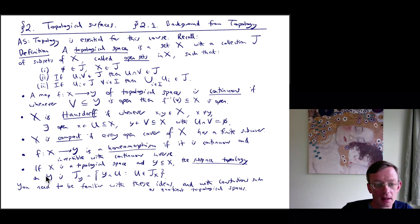A function F going from X into Y is a homeomorphism if it is continuous and invertible with continuous inverse. So homeomorphisms are isomorphisms of topological spaces. Finally, if X is a topological space, Y is contained in X as a subset, then the subspace topology on Y is T_Y, which is the intersection Y intersect U of all open sets in X.